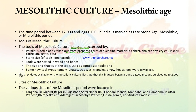The Mesolithic Age. The time period between 12,000 and 2000 BC in India is marked as the Light Stone Age, or Mesolithic or Microlithic period. The tools of Mesolithic culture were characterized by parallel-sided blades taken out from prepared cores of fine materials such as chert, crystal, jasper, agate, etc. Stone size decreases, and tools were hafted in wood and bones. Some new tool types namely trapeze, triangle, and others were also used as composite tools.